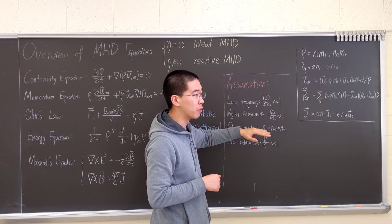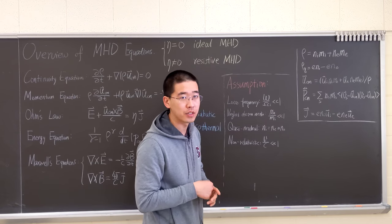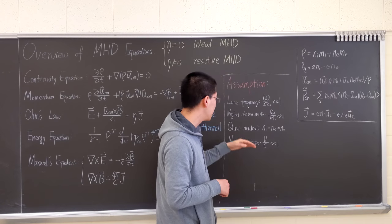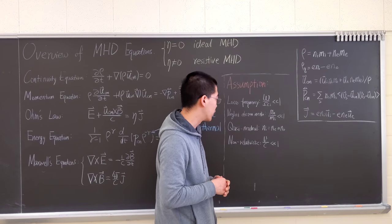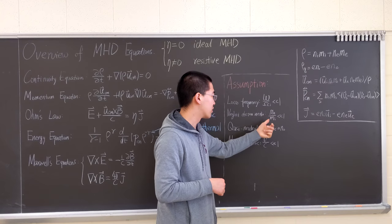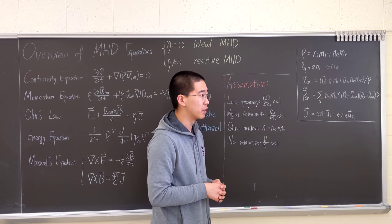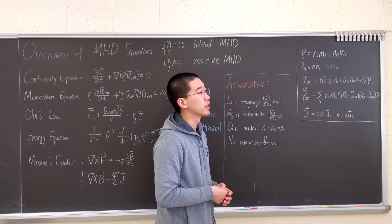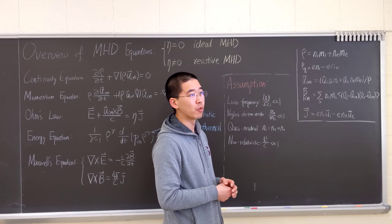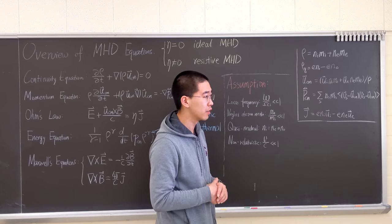So the frequency will be much less than the ion cyclotron frequency. And we neglect the electron inertia, so Me over Mi is much less than one, which is very correct because Me over Mi should be on the order of 10 to the negative three.